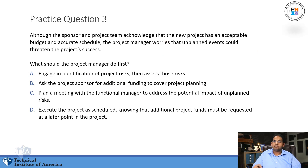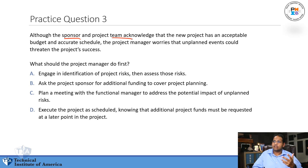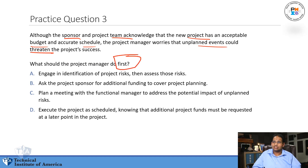Practice question three: Although the sponsor and the team acknowledge that the new project has an acceptable budget and accurate schedule, the project manager worries that unplanned events could threaten the project success. The team and the sponsor both know the project has an acceptable budget and schedule, but the project manager is worried about some kind of unplanned event that could threaten success. What should you do first?